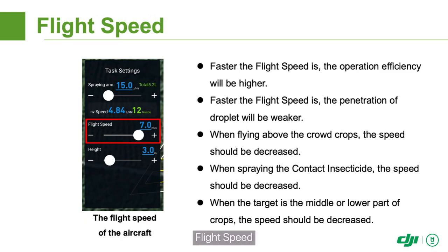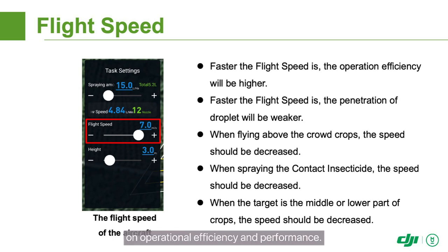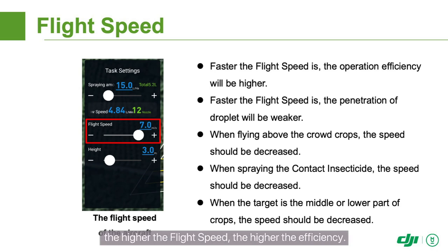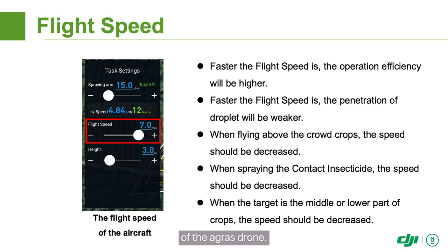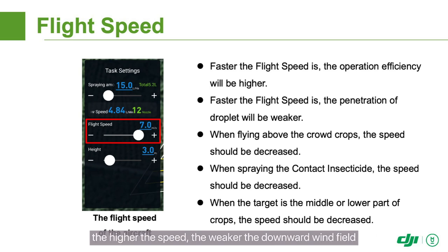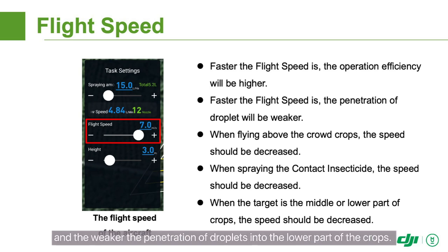The flight speed has a major impact on operational efficiency and performance. Given the same spraying amount, the higher the flight speed, the higher the efficiency. The flight speed also directly influences the downward wind field of the agri-drone. Within a certain range, the higher the speed, the weaker the downward wind field, and the weaker the penetration of droplets into the lower part of the crops.